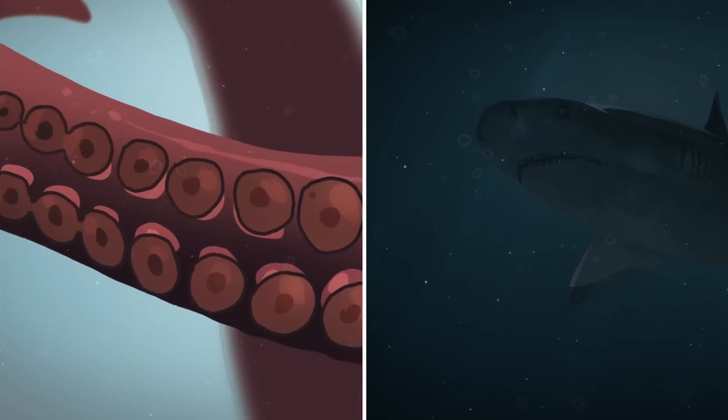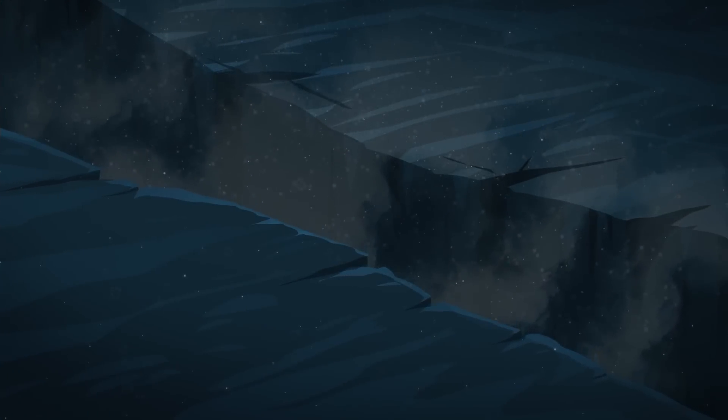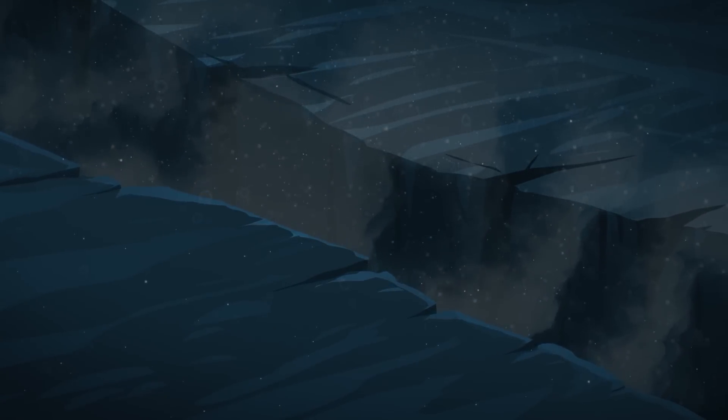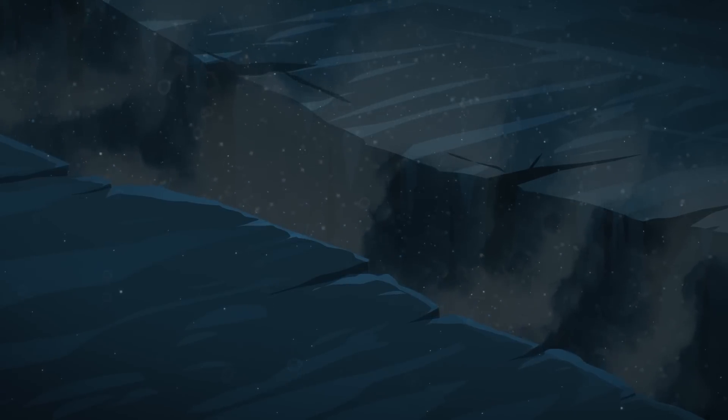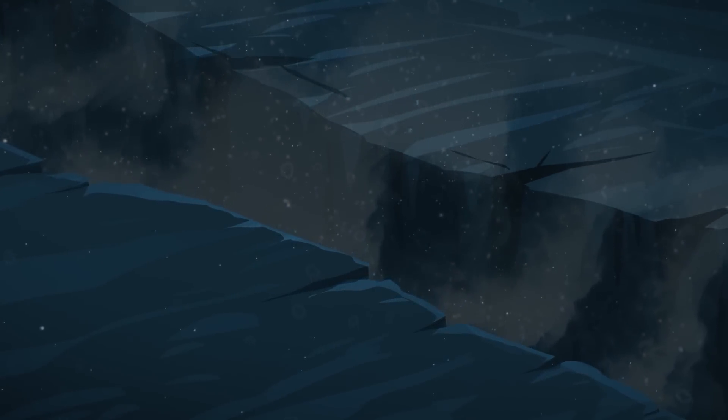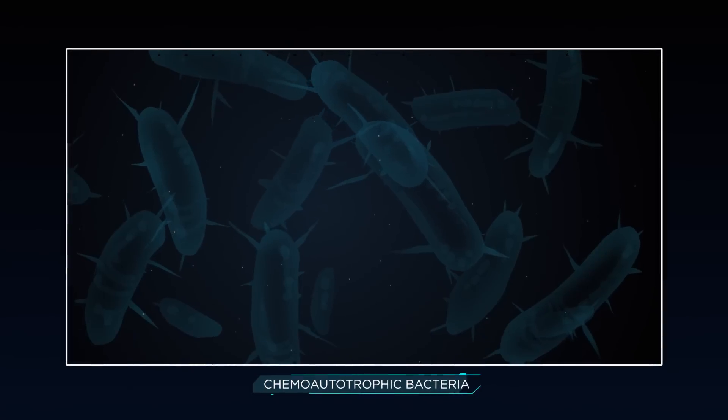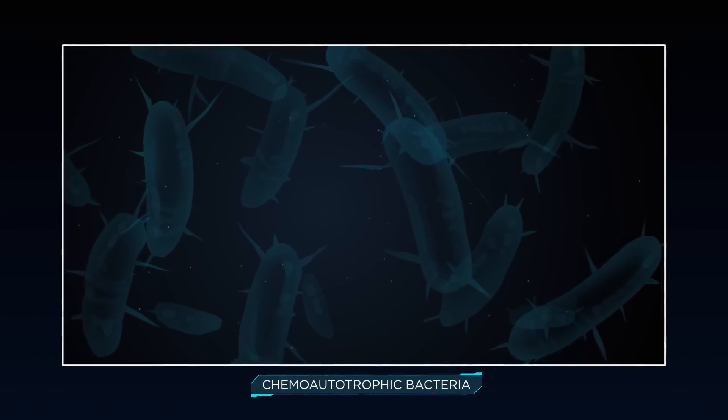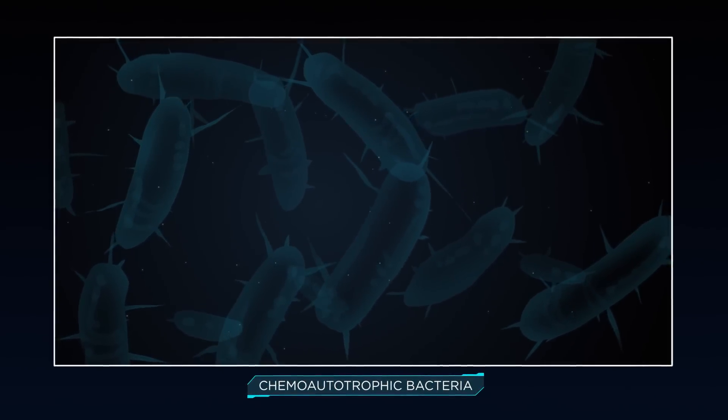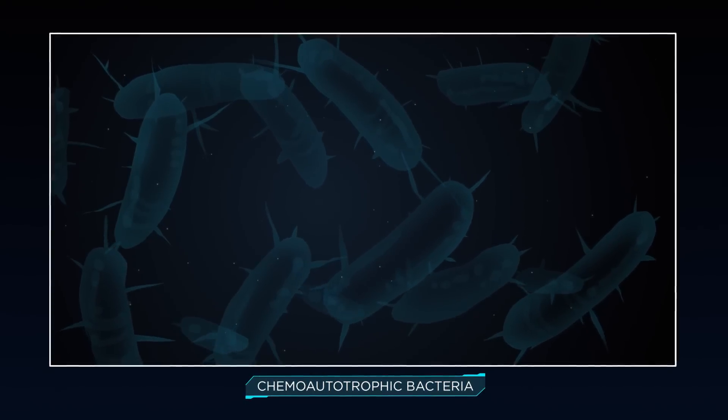Some deep sea creatures flourish around undersea geysers or hydrothermal vents, which erupt in streams of mineral-rich seawater warmed by magma deep in the Earth's crust. Hydrothermal vents nourish millions of microscopic organisms called chemo-autotrophic bacteria, which create energy in the absence of sunlight.